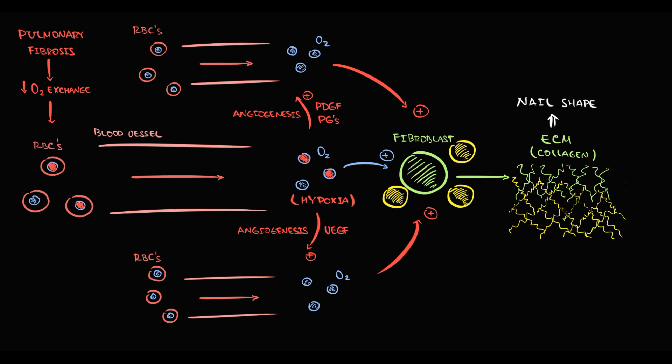Hyperproduction of collagen causes substantial enlargement of the extracellular matrix. Increase in extracellular matrix manifests as increased nail thickness. These very thick nails are what we call digital clubbing.